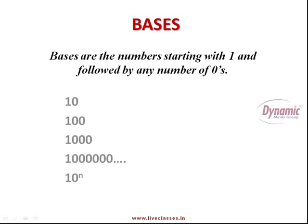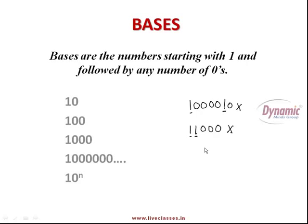The condition is that there should be only one '1' at the start, followed by zeros — those numbers are called bases. Now, if I give you a number, is it a base or not? It is not a base because after the one there should be only zeros, no other digit in between. Similarly, a number with two ones is not a base — there should be only one '1'.